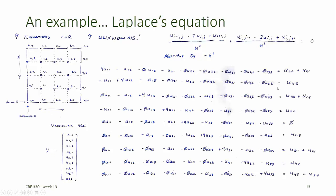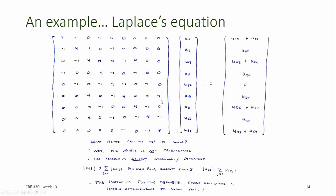The second equation corresponds to Laplace's equation centered around the point u(2,1). Now we have three unknown interior points — u(1,1), u(1,3), and u(2,2) — that all contribute, and one known boundary point at u(0,2). We can write this equation for all nine of the interior mesh points, which enables us to extract out the 9 by 9 coefficient matrix.